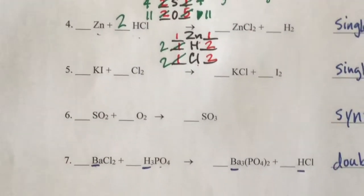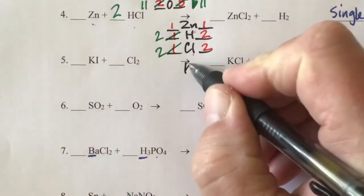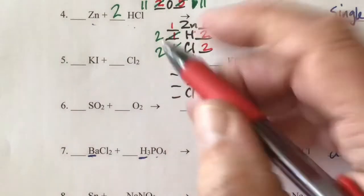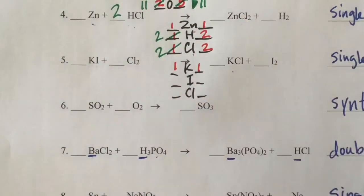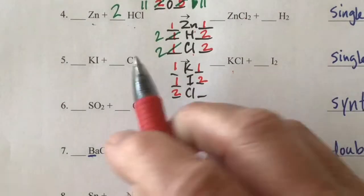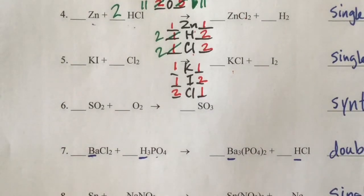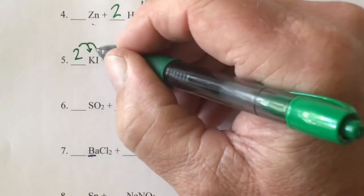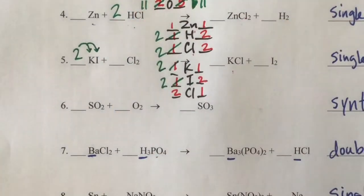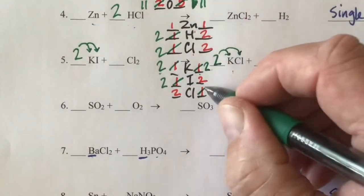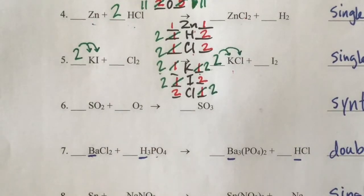On to the next one. We have potassium, iodine, and chlorine. One potassium in the reactants, one in the products. One iodine in the reactants, two in the products. Two chlorides in the reactants, one in the products — iodines and chlorines are not balanced. Put a 2 in front of KI to get two iodines, but that also makes potassium two. So put a 2 on the product KCl side — that changes potassium to two and chlorine to two. And we are balanced.